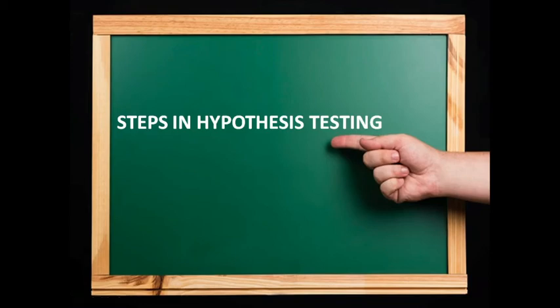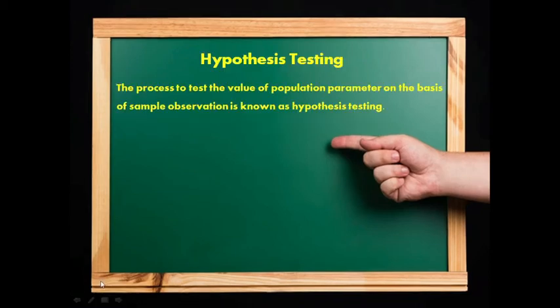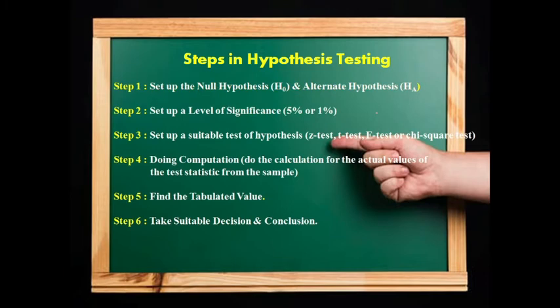Hello friends, today we will discuss the steps in hypothesis testing. Let's start. Hypothesis testing: the process to test the value of a population parameter on the basis of sample observation is known as hypothesis testing. When we test a population parameter on sample observation's base, we call it hypothesis testing. We will discuss the steps in hypothesis testing.